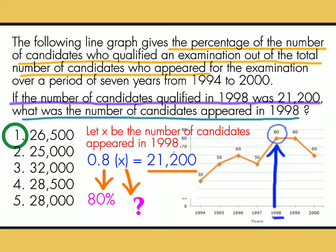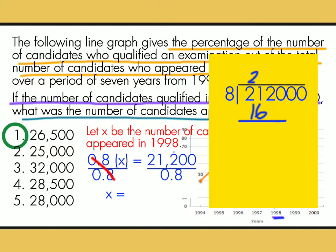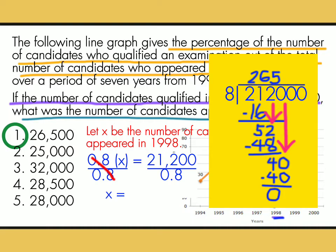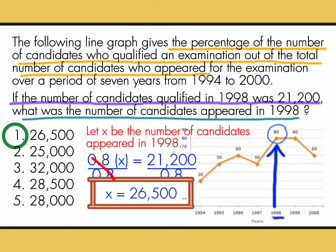So para mahanap natin ang value na x, ay divide both sides by 0.8. So 21,200 divided by 0.8. We need to move the decimal point para maging whole number — at kapag nag-move tayo sa ating divisor, mag-move din tayo sa ating dividend. 8 x 2 is 16; 21 minus 16 is 5; bring down 2. 8 x 6 is 48; 52 minus 48 is 4; bring down 0. 8 x 5 is 40; 40 minus 40 is 0. So 21,200 divided by 0.8 is equal to 26,500. Therefore, there are 26,500 candidates appeared in 1998.